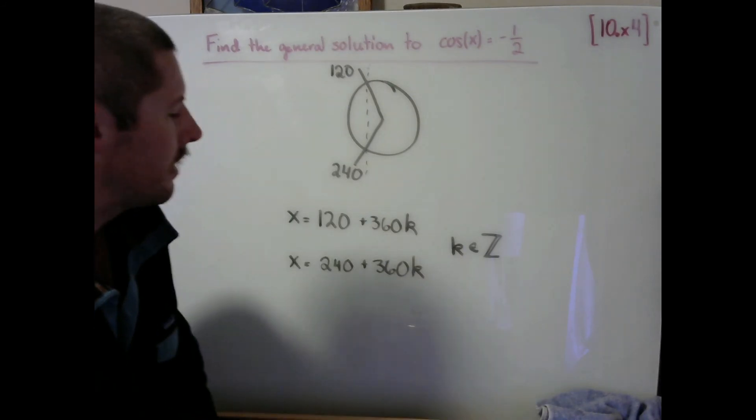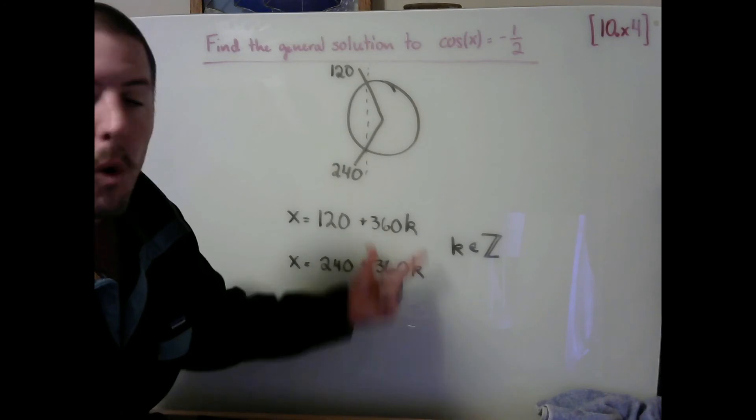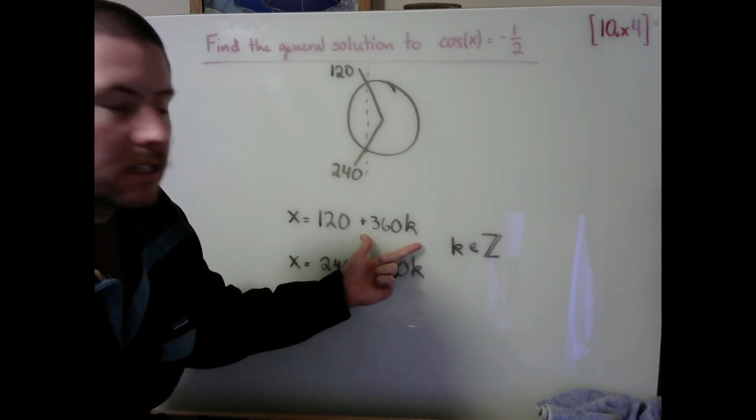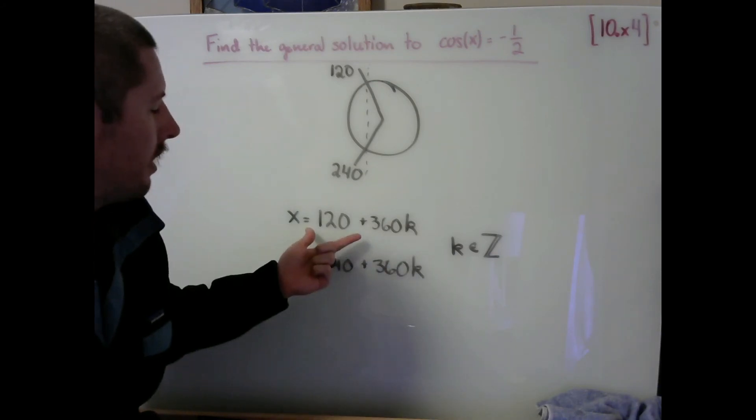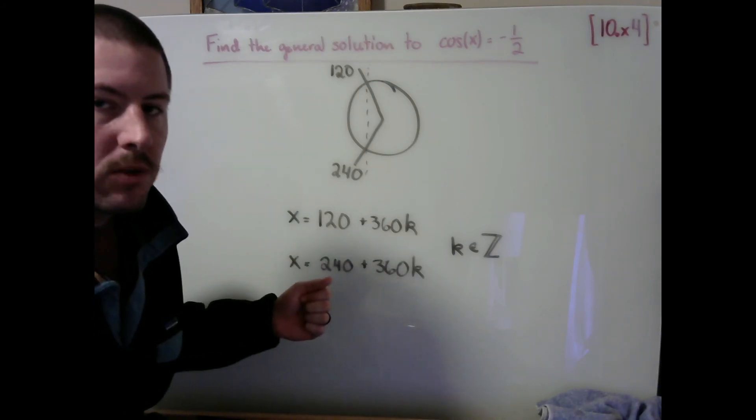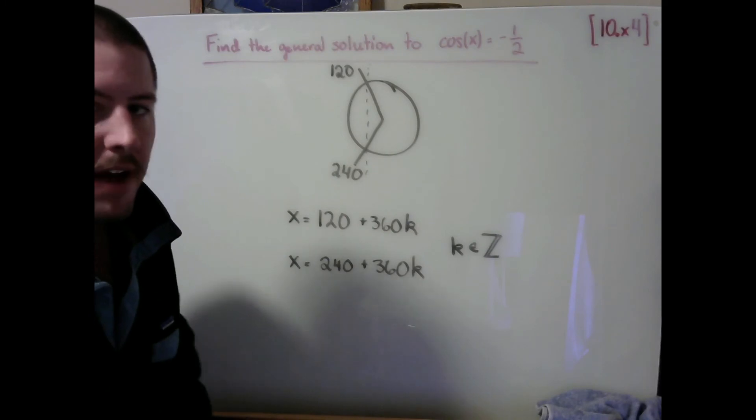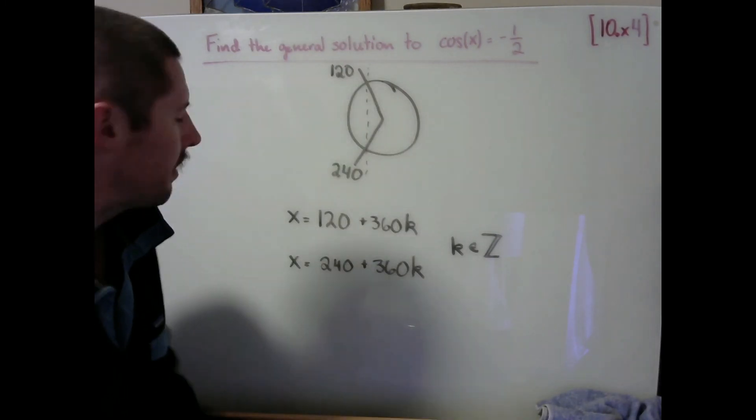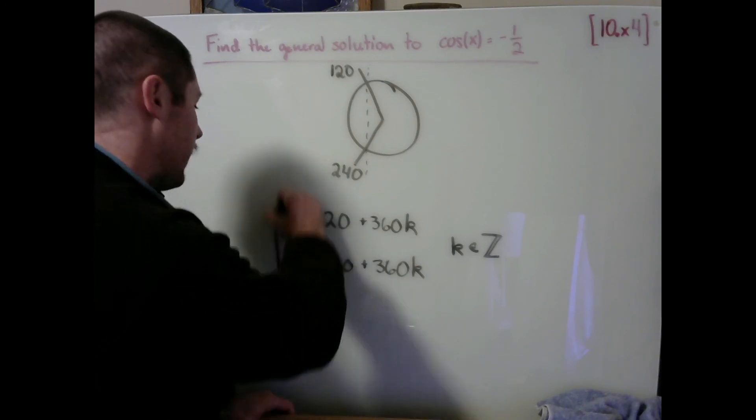So this says to me that I can add or subtract—remember integers can be positive or negative—I can add or subtract 360 any number of times that I want relative to a starting angle of 120. And all of these should provide our solutions that are going to land us at a cosine value of negative a half on the unit circle. So for my final answer here...